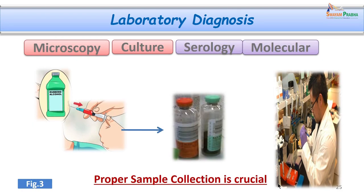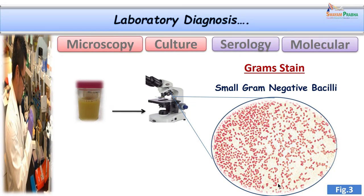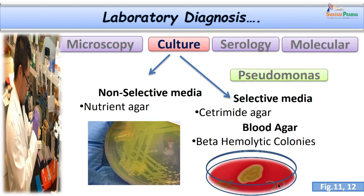Proper sample collection is very crucial and plays a key role in diagnosing hospital acquired infections. Collection should be done with dry antiseptic technique, followed by immediate transport to the laboratory. For wound infections, pus is collected and immediately transferred. Gram staining of a smear shows small gram negative bacilli. Gross examination of the sample is also an important step.